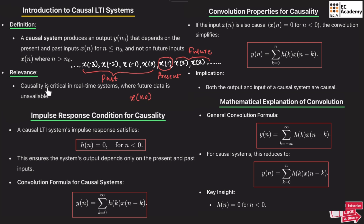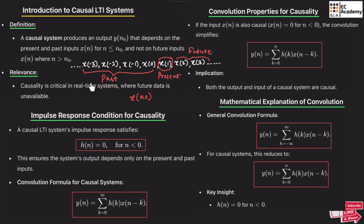Causality is critical in real-time systems. Causal systems are very important for real-time systems where future data is unavailable. In real-time systems, we don't have any future data, but these systems depend upon the past and present data.